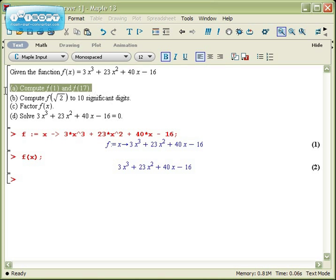That means part a is really easy to work out. If you want f(1) and f(17), we'll type in f(1) and f(17). f(1) is 50. f(17) is 22,050.